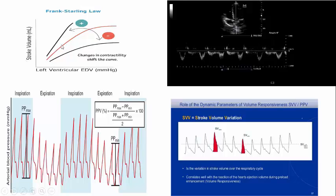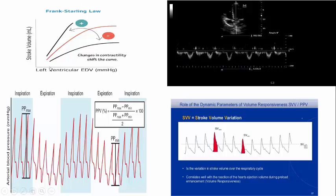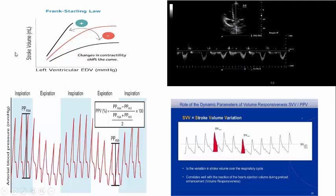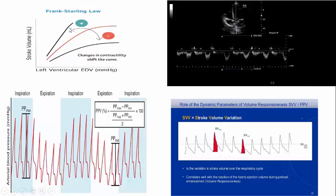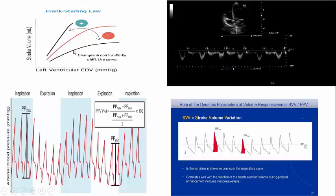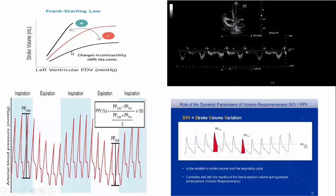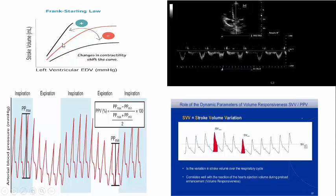This Frank-Starling curve, as you see here, determines the relationship between preload — which is the fluid you give to the patient — and the stroke volume, the result of giving this fluid. There are several Frank-Starling curves: this is the normal curve, this might be a mildly impaired ventricle, and this a markedly impaired ventricle. Even with decreased left ventricular contractility, there is always a steep part of the curve and a plateau.